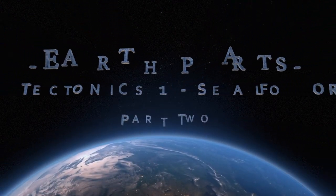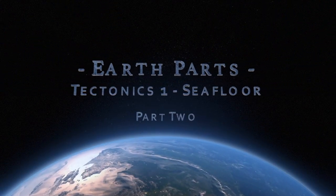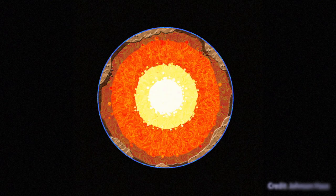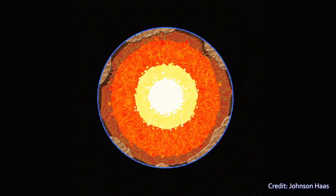Hi, I'm Dr. Johnson Haas and welcome to Earth Parts. The discovery of seafloor spreading closed the case and made it clear that plate tectonics was happening. A lot of work has happened since then and we've developed a sophisticated view of the interior of the earth based upon research into what the crustal plates are like and what the mantle is like below. This diagram shows in schematic form where the various layers of the earth are and what their role is with regard to tectonics.